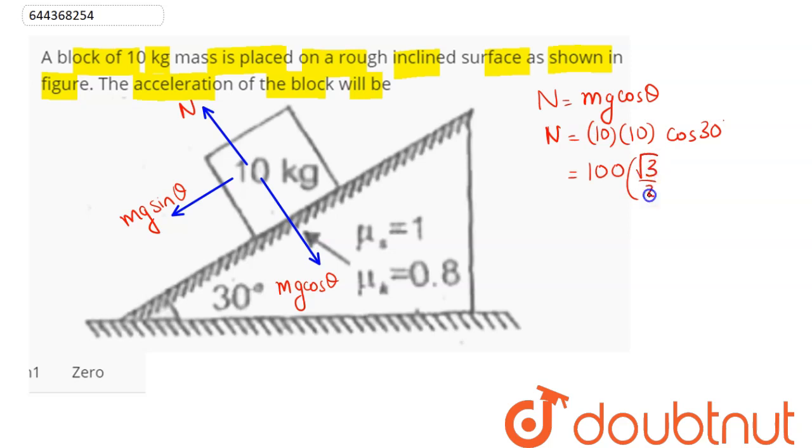cos 30 is root 3 by 2. So this comes as 100 into root 3 is 1.732. So this comes as 50 root 3.